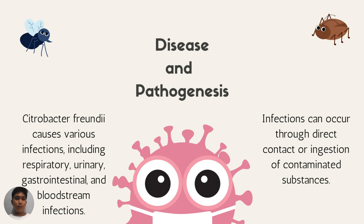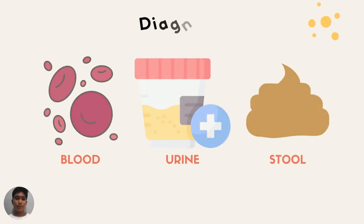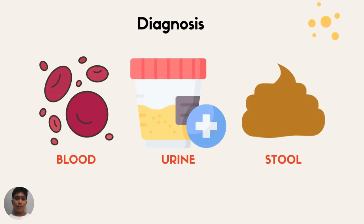Disease and pathogenesis. Citrobacter freundii causes various infections including respiratory, urinary, gastrointestinal, and bloodstream infections. Infections can occur through direct contact or ingestion of contaminated substances.